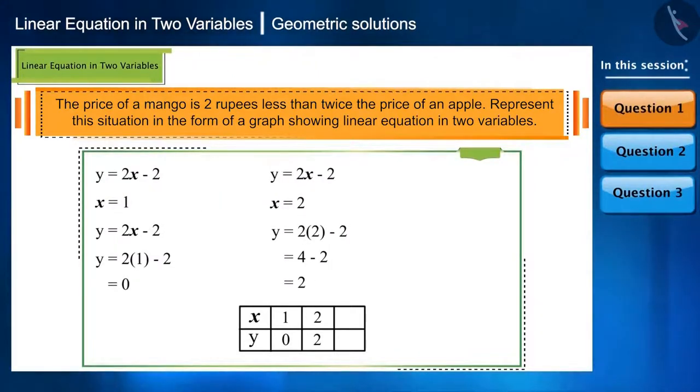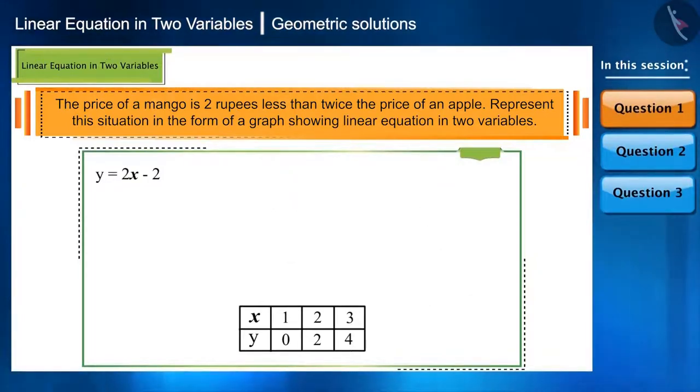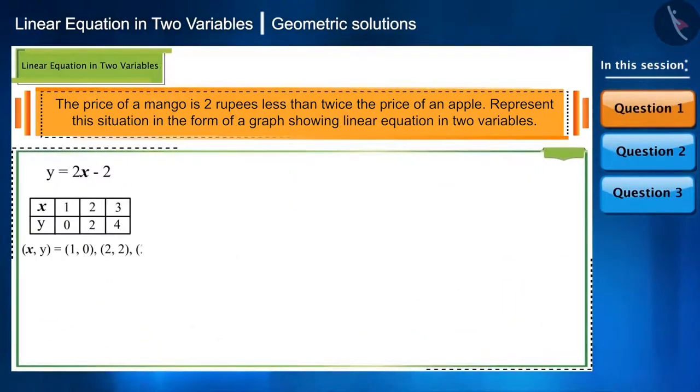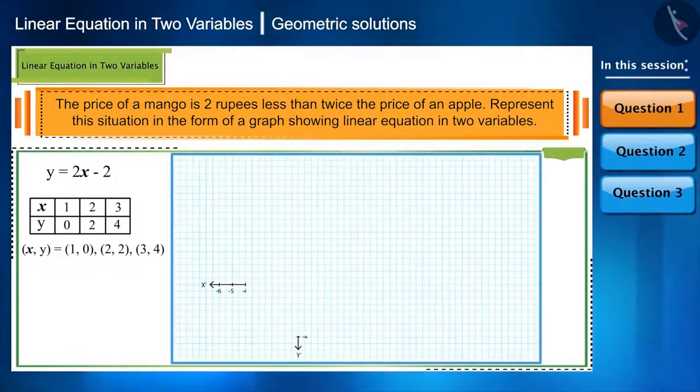By the way, two coordinate points are sufficient to draw a line. But let's find the third point also. Let's put 3 in the place of x and see what we get. Now without wasting much time, let's draw a graph with the help of these three coordinate points.